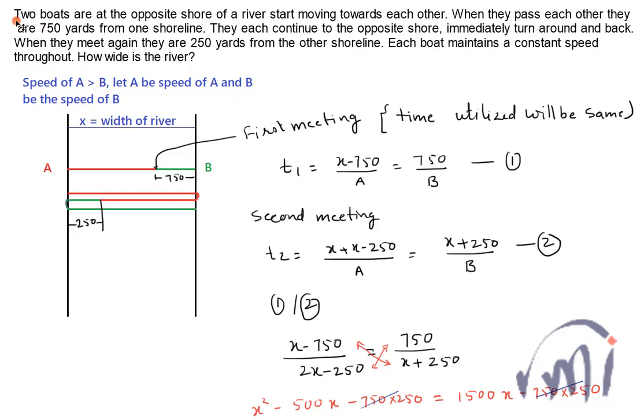Here is the problem statement which says two boats are at the opposite shore of a river, starts moving towards each other. When they pass each other they are 750 yards from one shoreline.